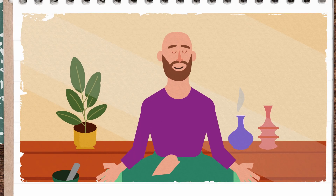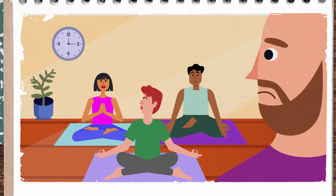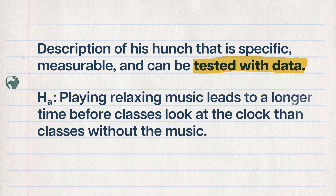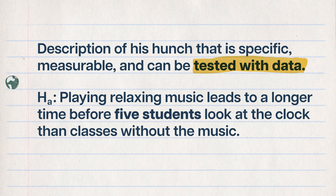I'm so stressed out by this squat rack situation that I'm seeking out meditation classes to help with my uncontrollable rage. But my meditation instructor, Jonas, is facing his own stressors. He's noticed that students keep looking at the clock during sessions and suspects that playing calming music might help. To frame this as a good statistical hypothesis, Jonas needs a description of his hunch that is specific, measurable, and can be tested with data. So he comes up with an alternative hypothesis: classes that have relaxing music playing will avoid looking at the clock for a longer period of time than those without the music. To be even more specific and measurable, he defines that period as however long it takes for five or more of his students to glance at the clock.